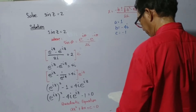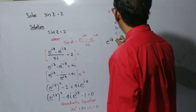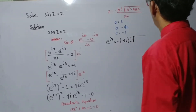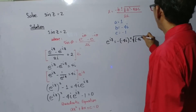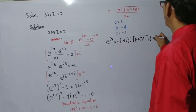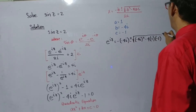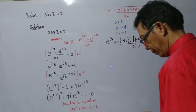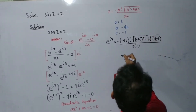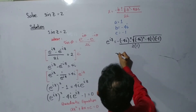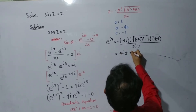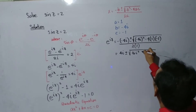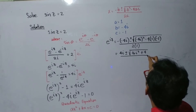We have e to the iz equals negative of negative 4i, plus or minus the square root of negative 4i squared minus 4 times a equals 1 times c equals negative 1, all over 2 times 1. To simplify, this becomes 4i plus or minus the square root of 16i squared plus 4, all over 2.